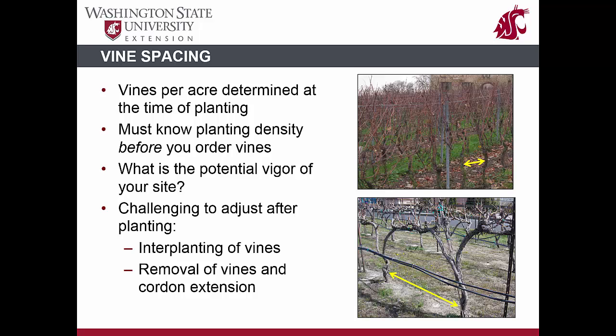After planting a vineyard, there are a few adjustments that can be made to planting density. These include interplanting vines should time prove that your original vine spacing was too sparse, or cordon extension should there be insufficient canopy growth to fill the trellis. Vine removal can also occur should the original planting density be too high. However, effort should be taken to determine planting density prior to vineyard establishment to avoid these costly adjustments.